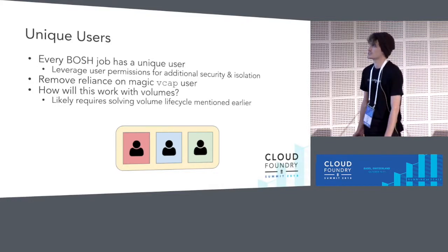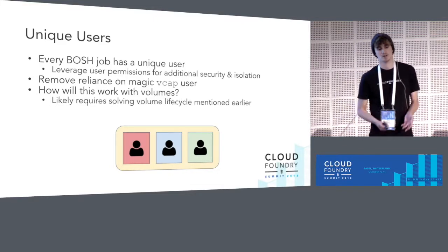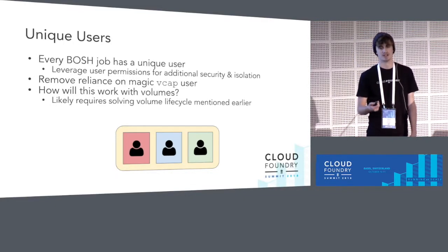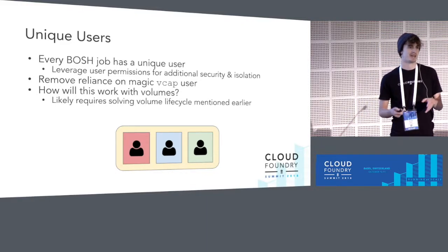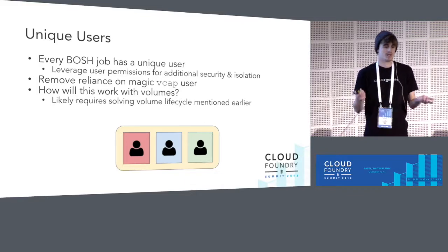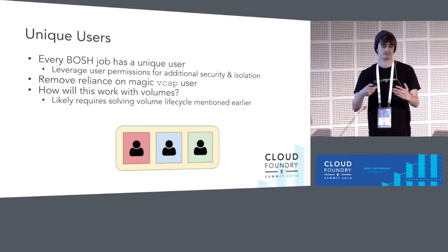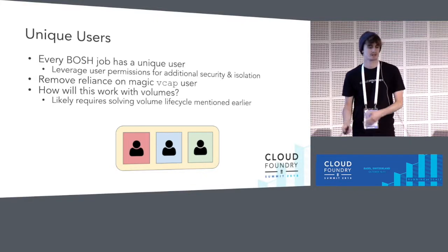The last thing is tackling unique users in BPM v2. Right now every Bosch process pretty much runs on the magic VCAP user. We'd like a world where BPM can provide a unique user for each process that executes, leveraging Linux user permissions for additional security and isolation. The biggest complexity is how this would work with volumes — if we use a new user for every process, permissions have to match so volumes can be shared. But with volumes as a first-class concept, we can start tackling this with group permissions or something else. It really helps us get to that world.